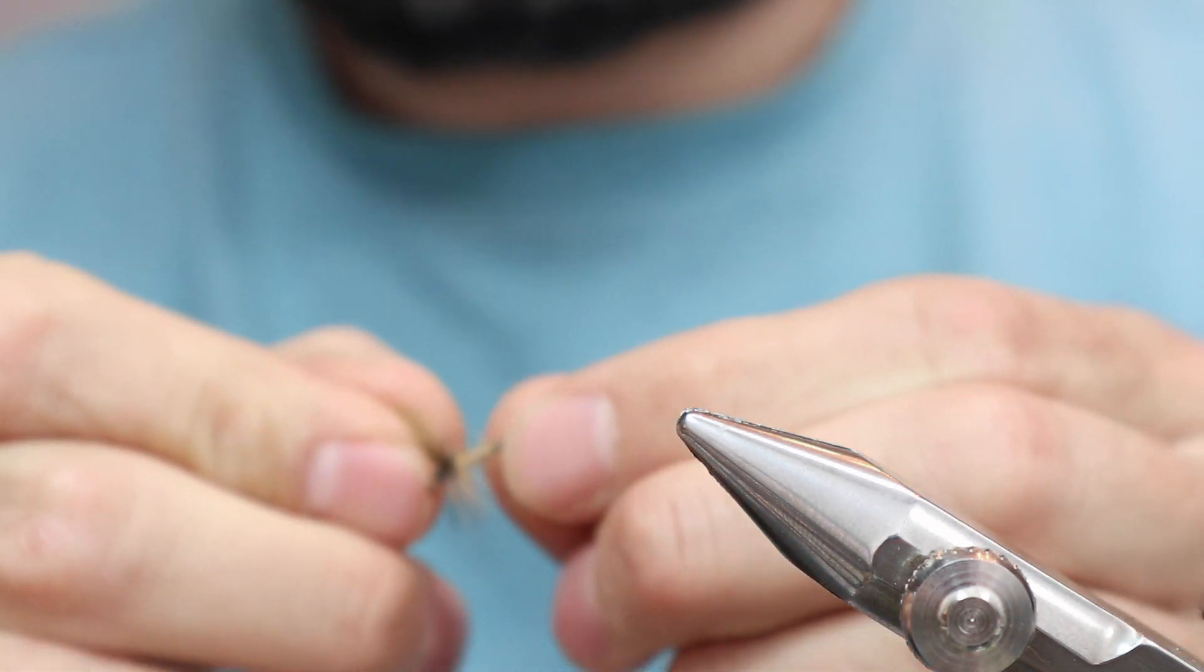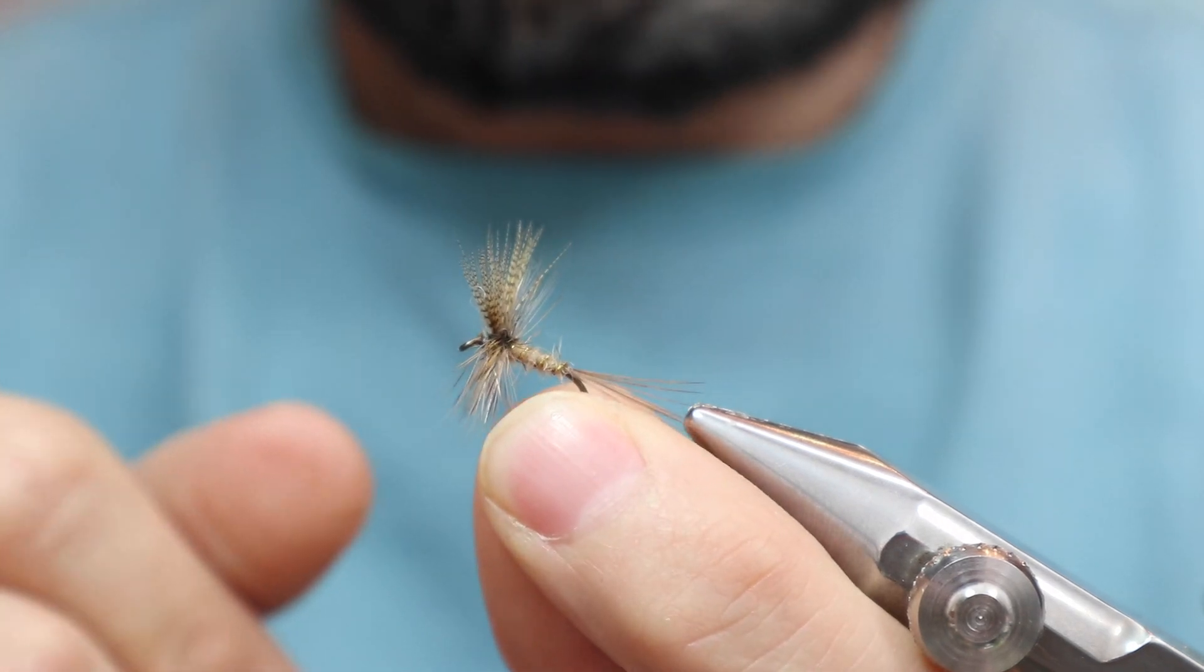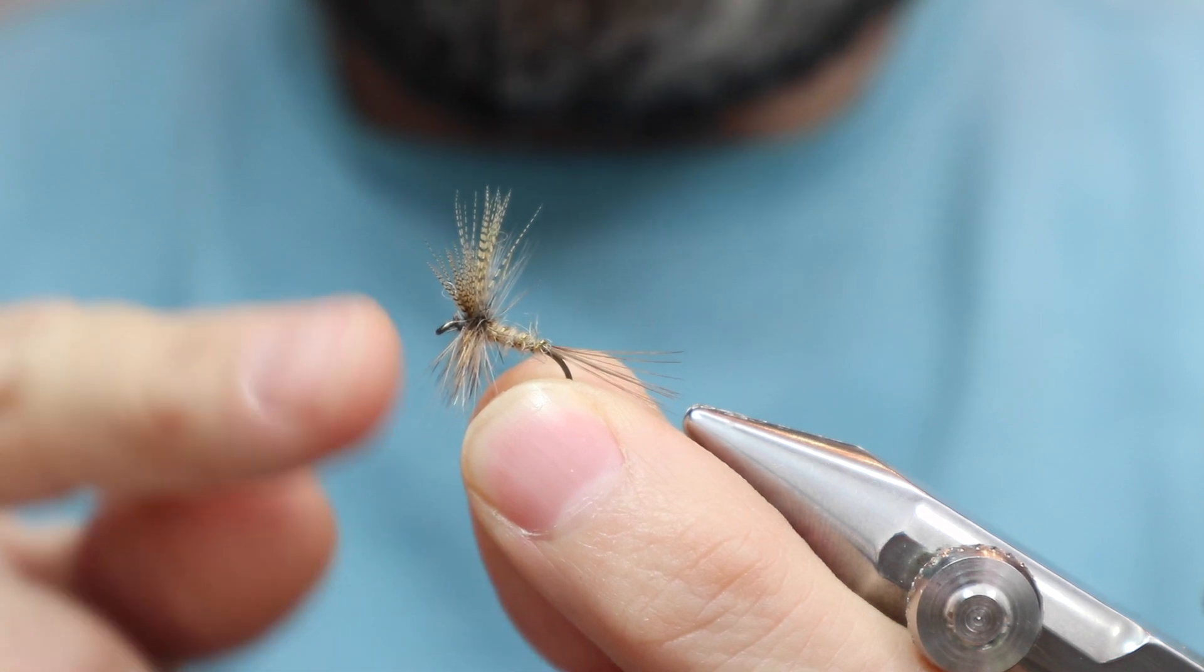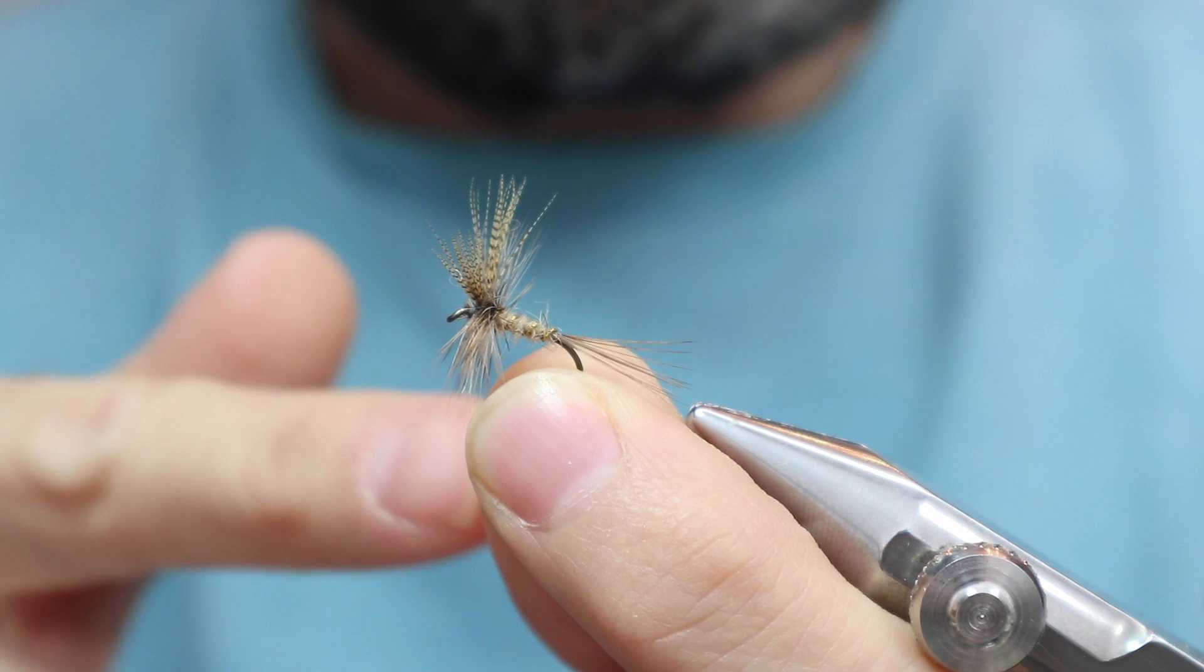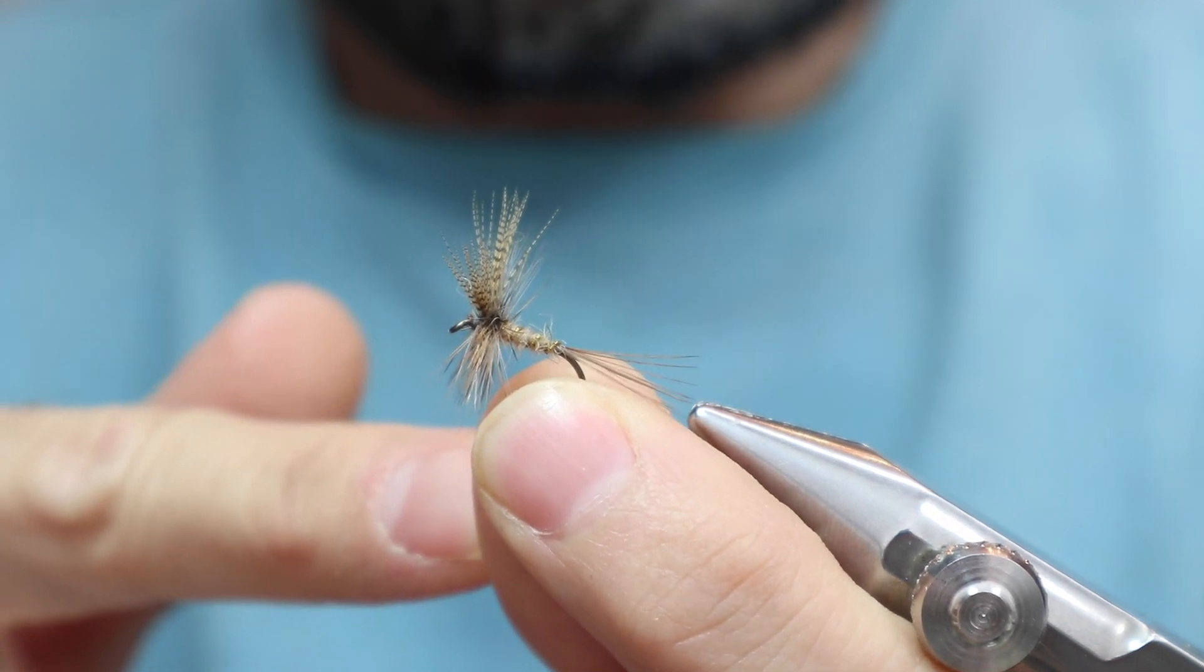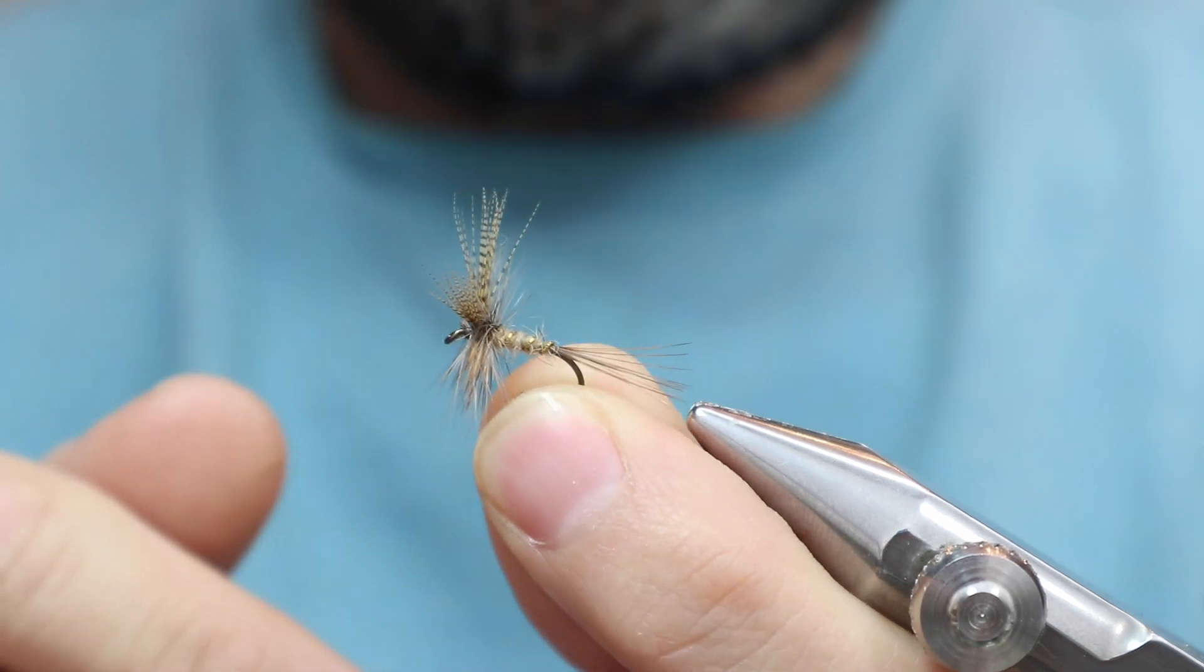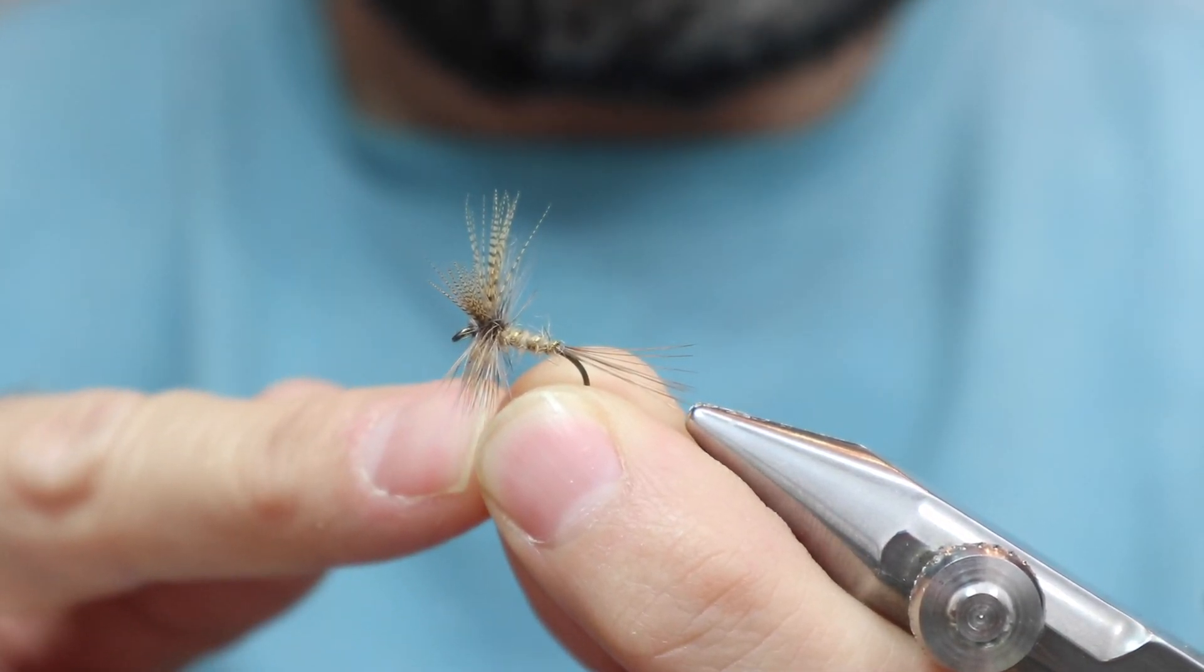I'll show you one of John's next here. This is one you could get, which is Atherton number two. John Atherton, the number two dry fly. This is from the book The Fly and the Fish. If you don't have this book, it's a really important book as far as fly tying is concerned and just fly fishing in general.